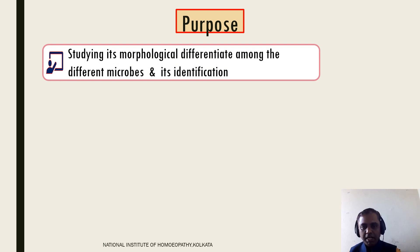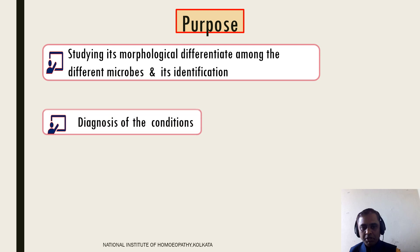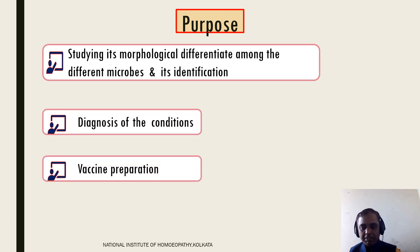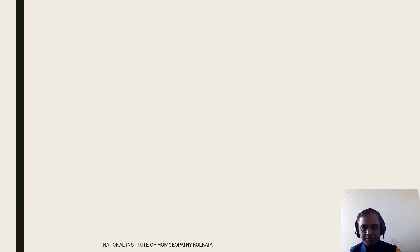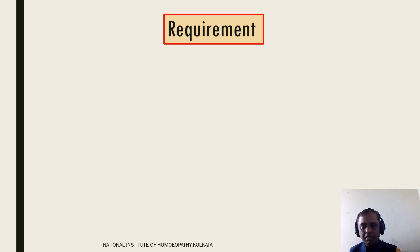The purpose of culture media has four main points. Number one: studying morphological differentiation among different microbes and their identification. Number two: diagnosis of conditions. Number three: helping for vaccine preparation. Number four: isolating or enriching the required microbe to identify its structure for vaccine preparation, serological kit preparation, etc. — as we are doing currently with COVID-19 vaccines.